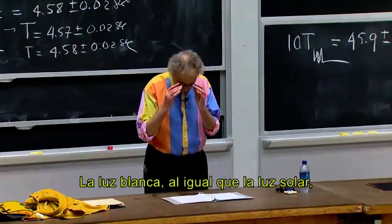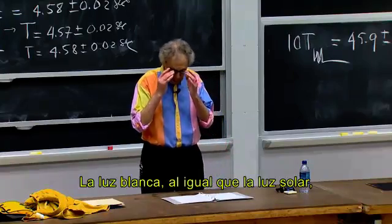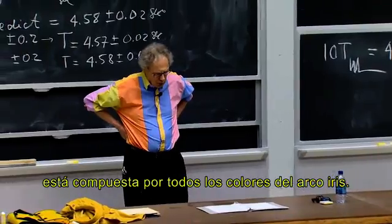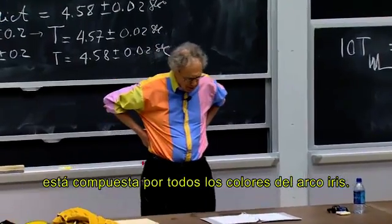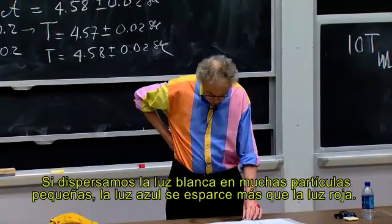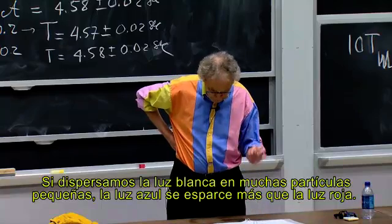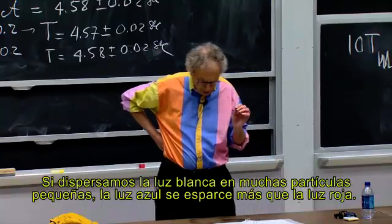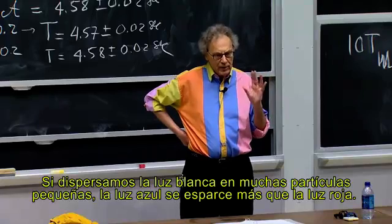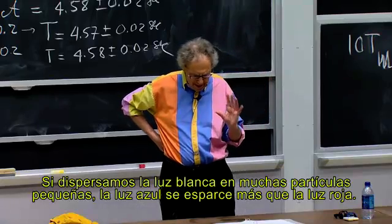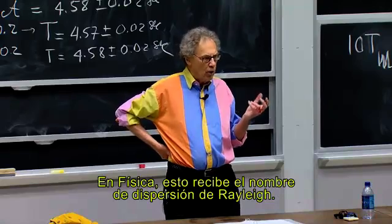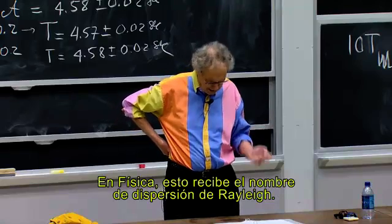White light, like sunlight, is composed of all the colors that you see in the rainbow. If I scatter white light off very small particles, then the blue light is scattered more than the red light. We give that a name in physics — we call that Rayleigh scattering.